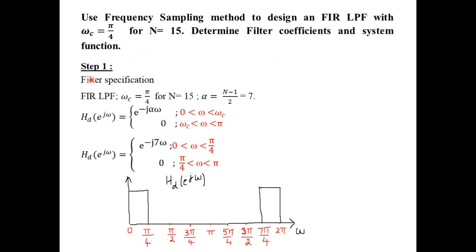Proceeding as per step 1, the filter specification is given as HD of e^(jω) equal to e^(−jαω) for ω from 0 to ωc, and 0 for ωc to π. Transforming this to the problem, the value of α is the center of symmetry: (N−1)/2 = (15−1)/2 = 7. So we get e^(−j7ω) and the cutoff frequency is replaced by π/4.